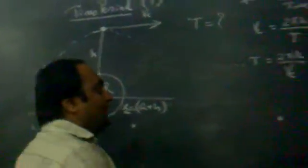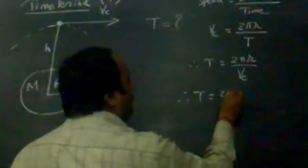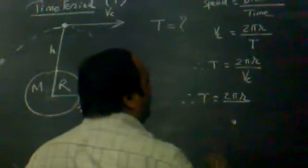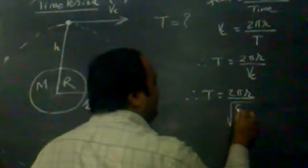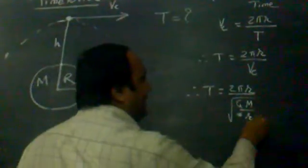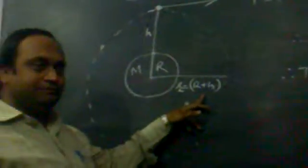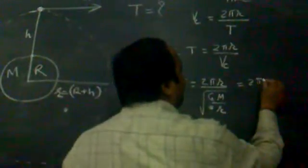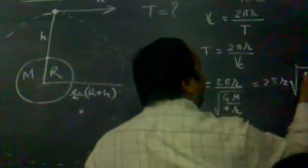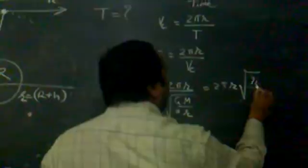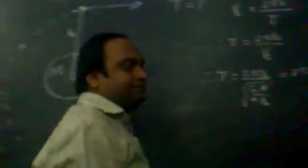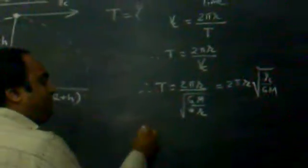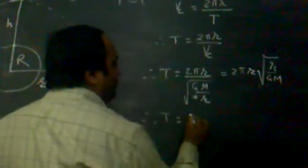Therefore, T equals 2π small r upon vc. We already know the critical velocity is the square root of GM upon r. So T equals 2π r upon the square root of GM upon r, and if we further simplify it, T equals 2π times the square root of r squared upon GM.